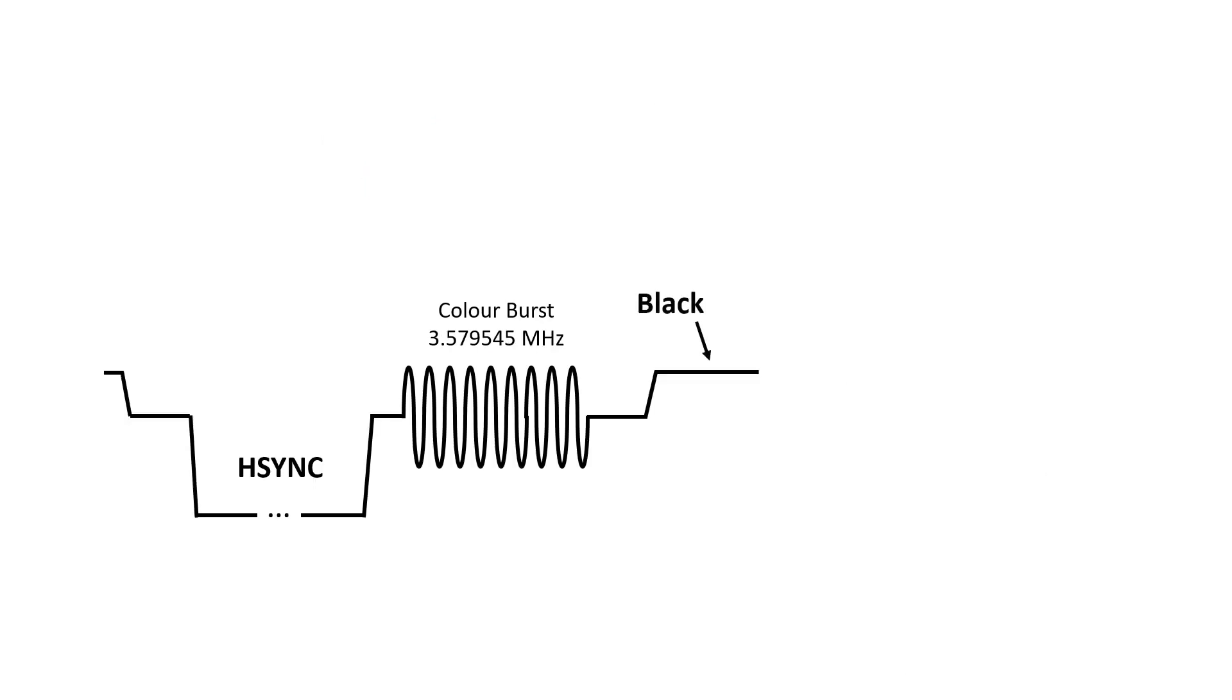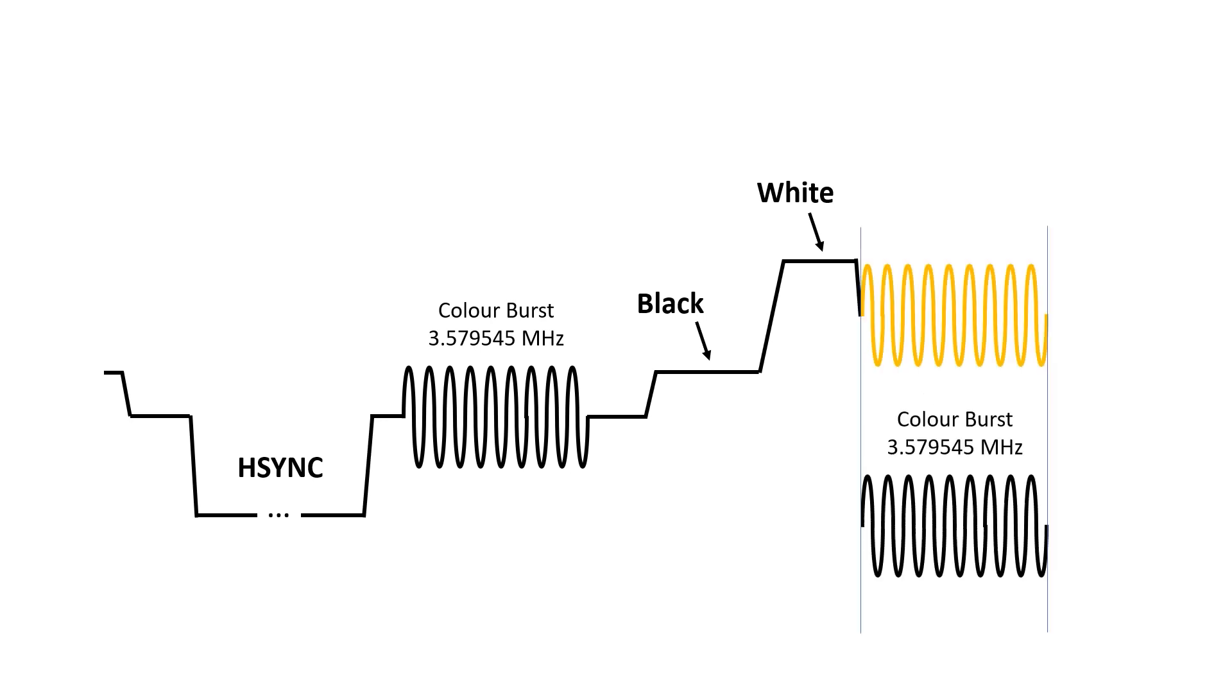After color burst, we have this short period of a black signal. Then we step into our active window. In this case, we then display white, which is just a constant voltage without any 3.5MHz signal. Then there's a color signal after that. The actual color displayed is determined by the phase and the amplitude, relative to our internal clock, which has the same phase and amplitude as our burst signal.